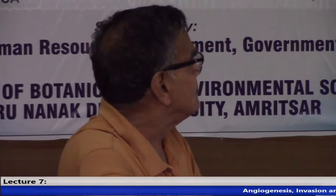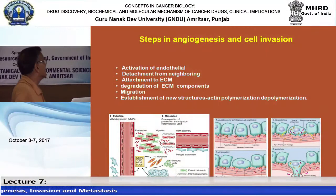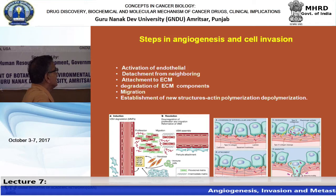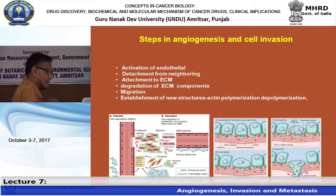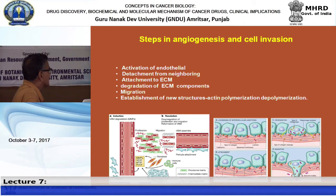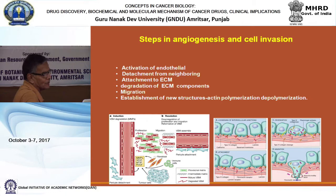The steps involved in cell invasion follow logical sequence: activation of endothelial cells, detachment from neighboring cells, attachment to the extracellular matrix, degradation of that matrix to get inside, and establishment of a new structure. Normal epithelium breaks, cells come out and move inward into new cells. This process involves many growth factors. Matrix metalloproteinases (MMPs) are especially important.